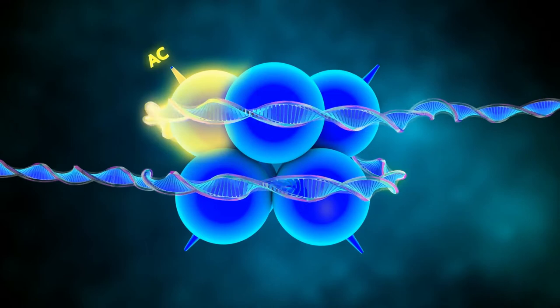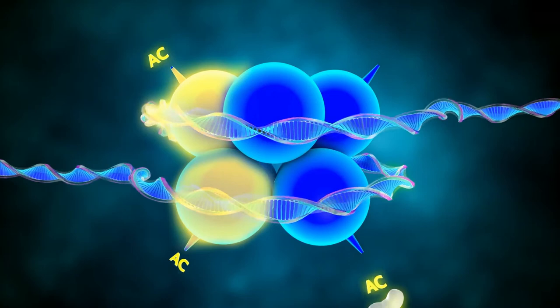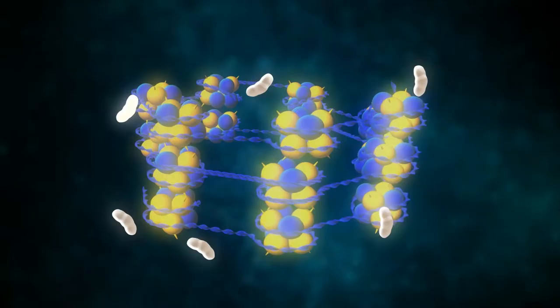Vice versa, histones are modified by acetyl groups which lead to relaxed chromatin. Thus, genes can be transcribed and translated into protein production.